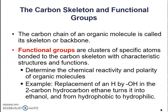The carbon chain of an organic molecule is called a skeleton or backbone — I use the term backbone more frequently, but both are accepted. Functional groups are clusters of specific atoms bonded to that carbon skeleton with characteristic structures and functions. They determine the chemical reactivity and the polarity of those organic molecules. For example, if I replace a hydrogen with an OH — a hydroxide — in a two-carbon hydrocarbon called ethane, it turns it into ethanol. It was hydrophobic and now it is hydrophilic, just by switching one atom in that molecule.